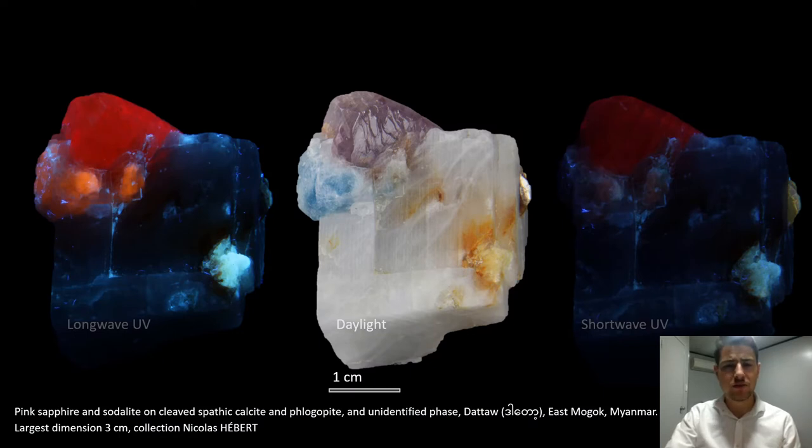Here is a closer view of the purplish corundum with red fluorescence and the blue feldspathoids. The phlogopite on the right is highlighted in short-wave. There is some staining here around a phase that hasn't been identified.